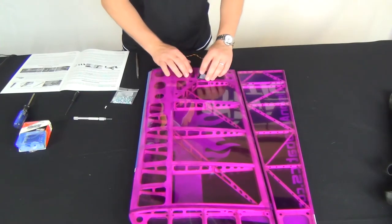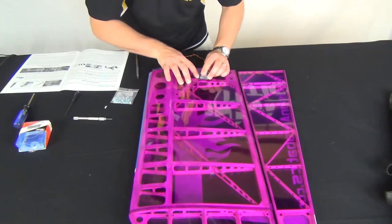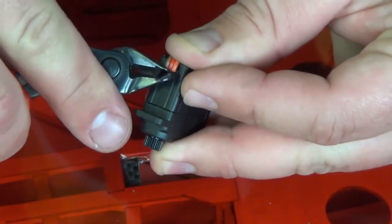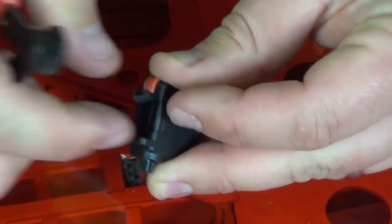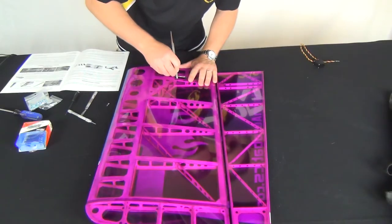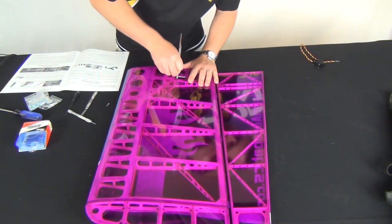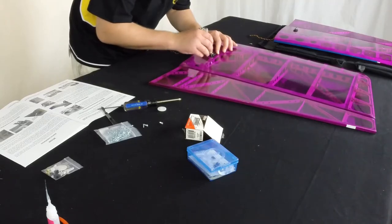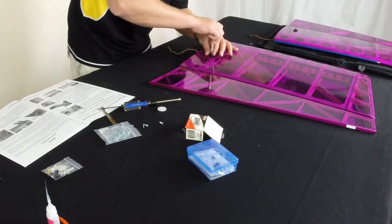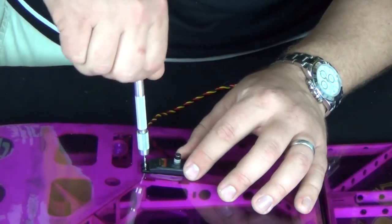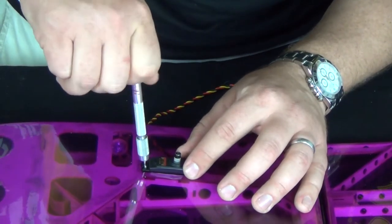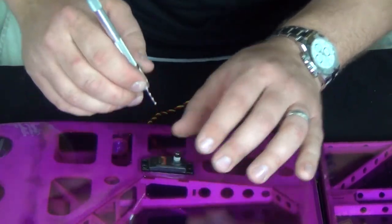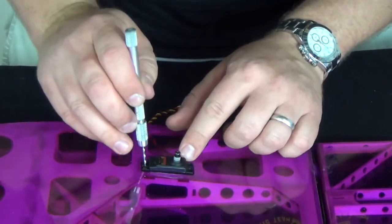We start by test fitting the servo into the bay. If it doesn't just drop right in, you may choose to either snip off the strain relief rubber around the servo wires or carefully open up the bay with a file. Once the servo fits, we'll make our future screw locations with a pin vise while we hold the servo in place. For my screws, I'm using a 1.5mm drill bit. So here we want to accurately drill two holes for the screws, and there's no need to fasten the servo around all four corners if it can be. Two is all we need.